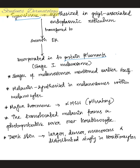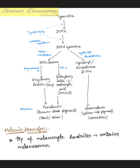Melanin is synthesized in melanosomes within melanocytes — melanosomes are the melanin-containing organelles. The major hormone controlling melanogenesis is alpha-melanocyte-stimulating hormone from the pituitary. The translocated melanin immediately forms a photoprotective cover over the nucleus of the keratinocyte.